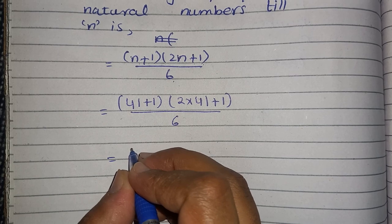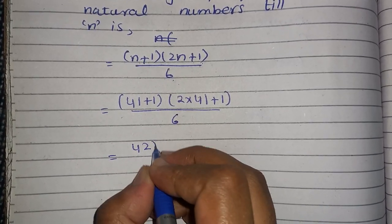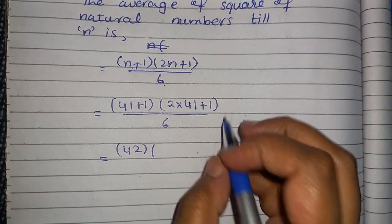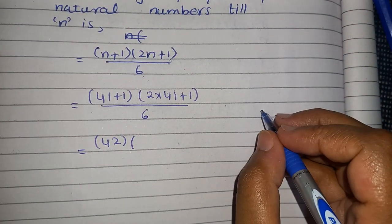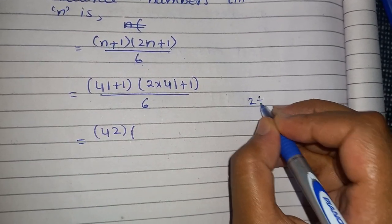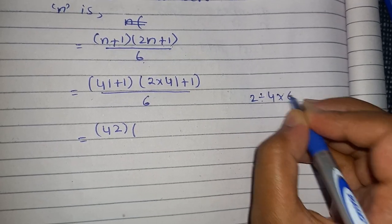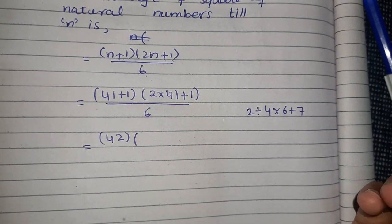Now students, you will get here 42. For example, most of the time in your exams, you are given expressions like this: 2 is divided by 4 multiply by 6 plus 7 or something like this.